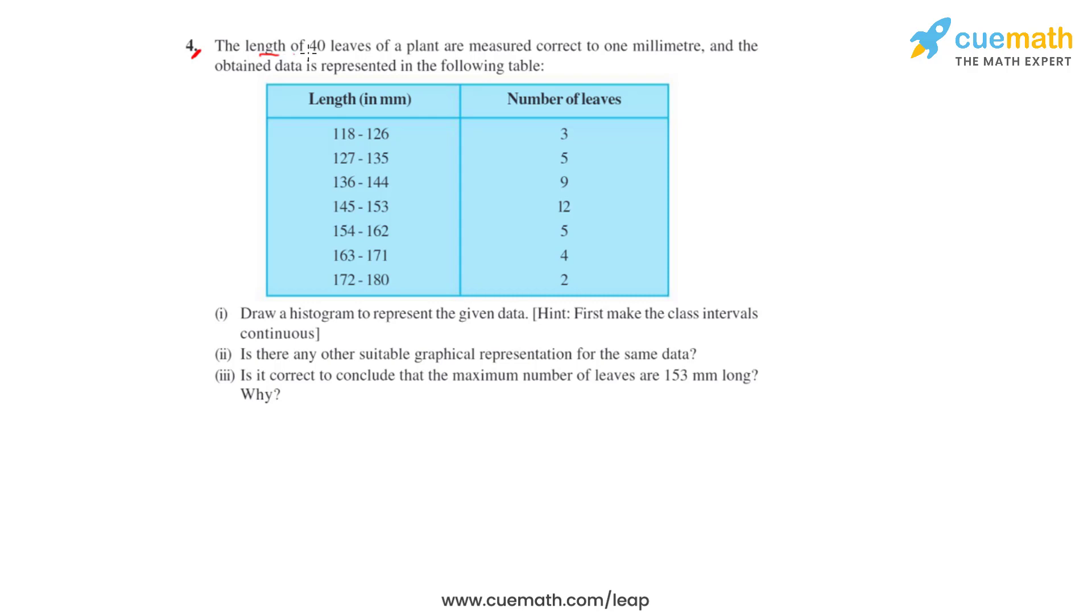Question number 4 says that the length of 40 leaves of a plant are measured correct to 1 millimeter and the obtained data is represented in the following table. We have to draw a histogram to represent the given data.